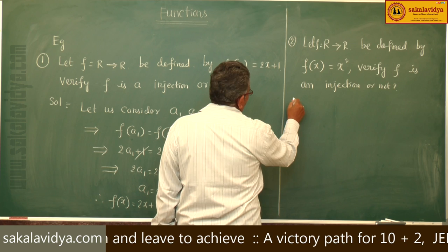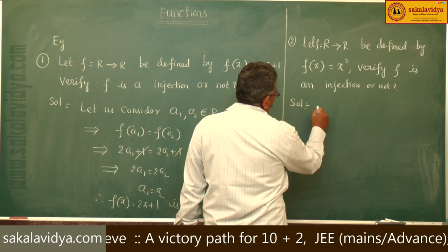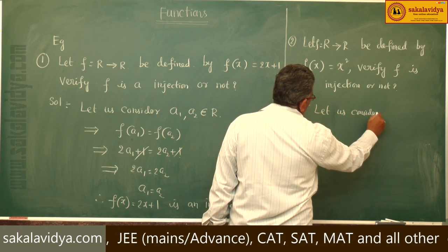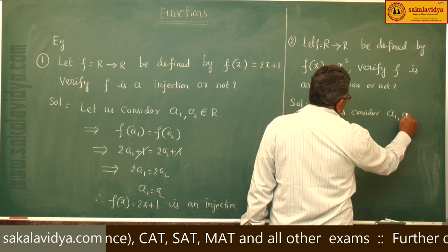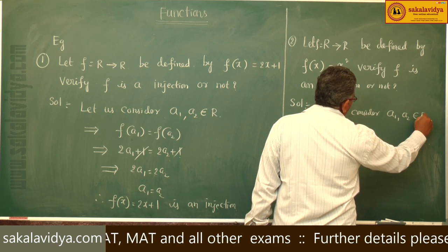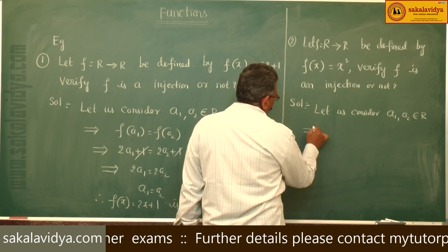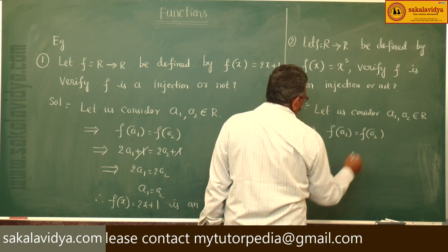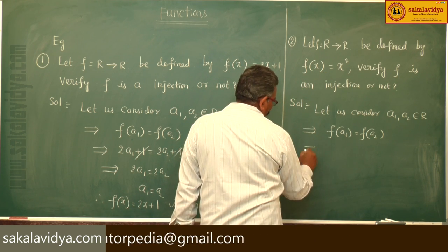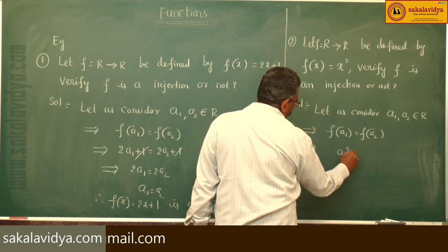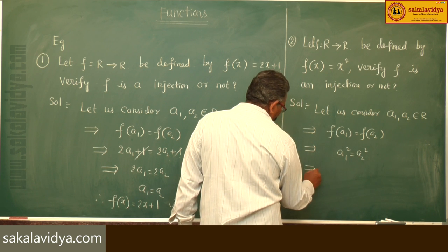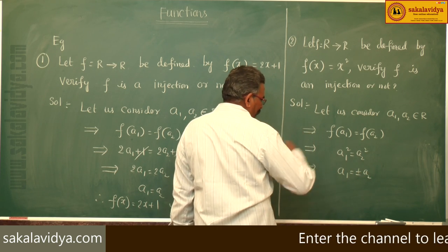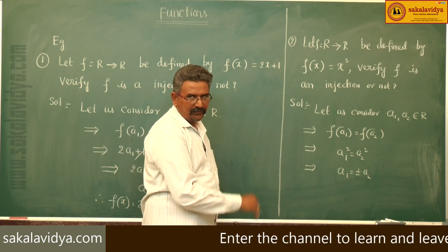Solution: Let us consider a1, a2 belong to R. Now, f(a1) equals f(a2). From this we get a1 square equals a2 square, so a1 equals plus or minus a2. Here we get a1 equals a2 and also a1 equals minus a2.